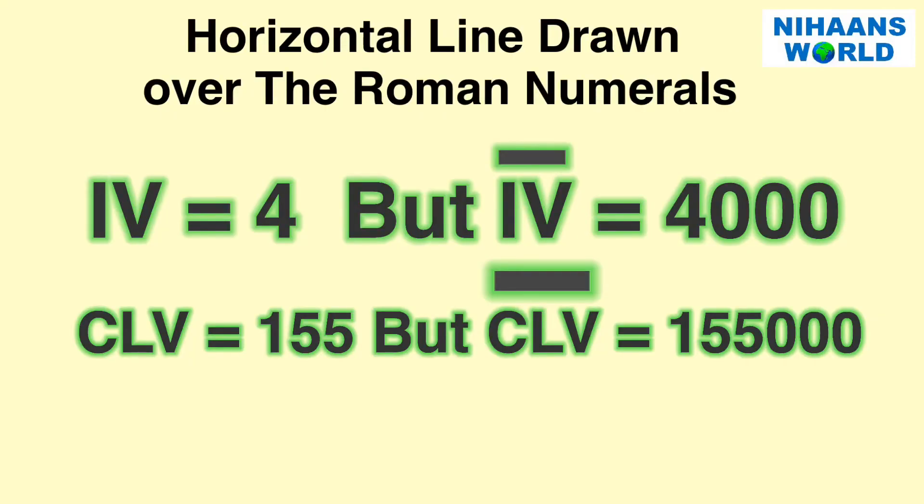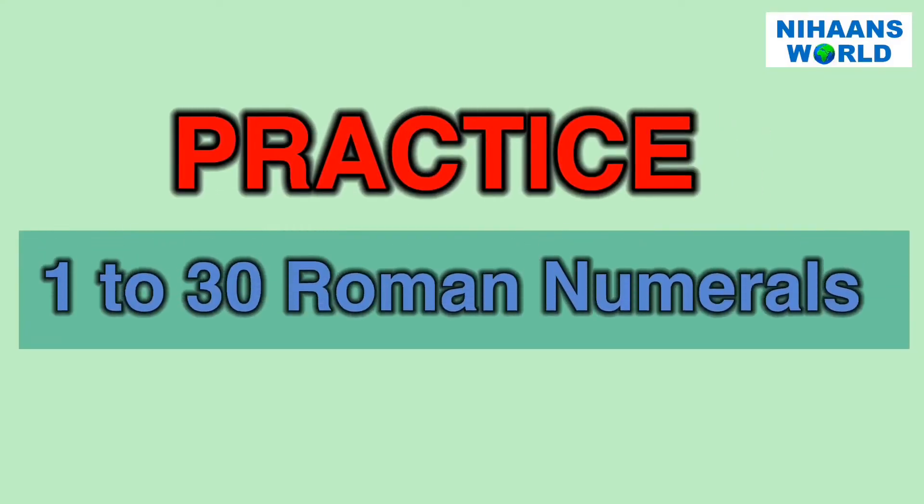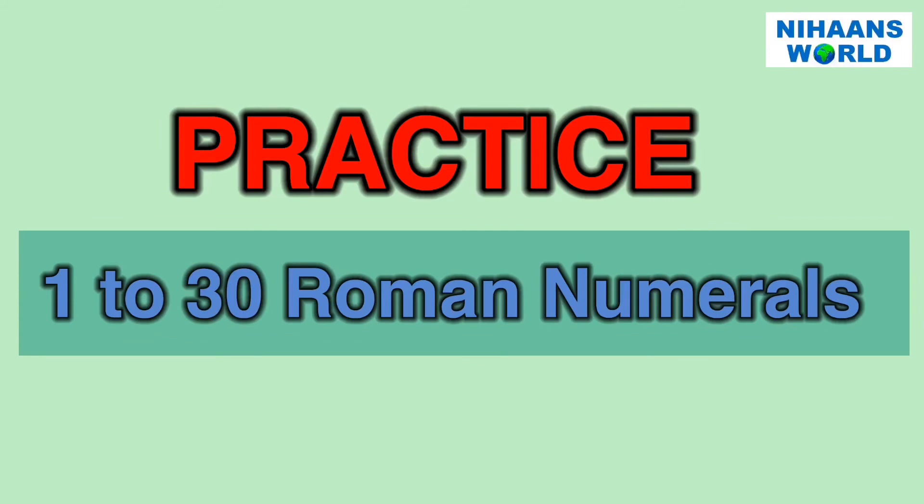If a horizontal line is drawn over the symbols or digits of Roman numerals, then the value of the numerals becomes one thousand times. I V equals four, but horizontal bar over I V equals four thousand. C L V equals one hundred fifty-five, but horizontal bar over C L V equals one hundred fifty-five thousand.